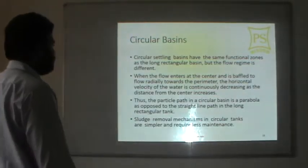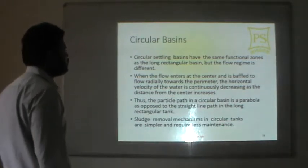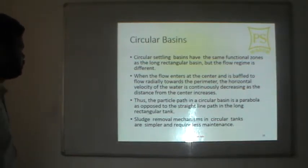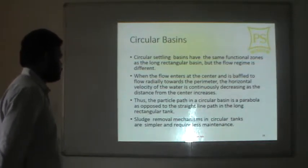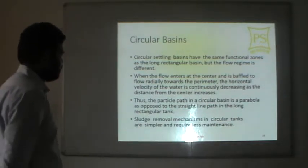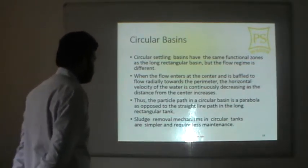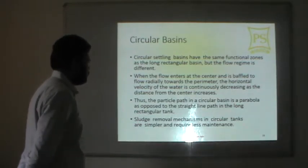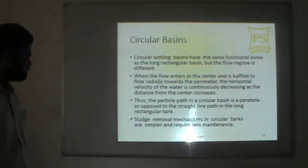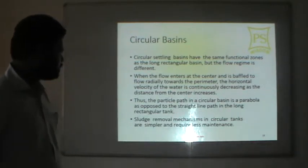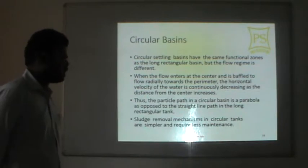Circular settling basins have the same functional zones as long rectangular basins, but the flow regime is different. When flow enters at the center and moves radially towards the perimeter, the horizontal velocity of the water continuously decreases as the distance from the center increases. The particle path in a circular basin is curvilinear, as opposed to the straight-line path in a long rectangular tank. The sludge removal mechanism in circular tanks is simpler and requires less maintenance.